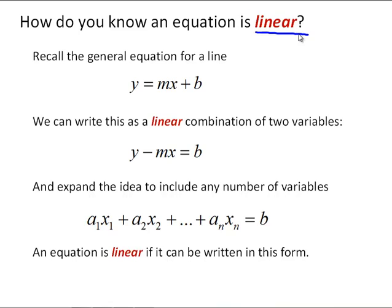We can write this as a linear combination of two variables where we have 1 times y minus m times x. It's called a linear combination because each variable is a constant times a variable. And the variable is not raised to any power, and it's not a function like a logarithm or a cosine or anything like that.